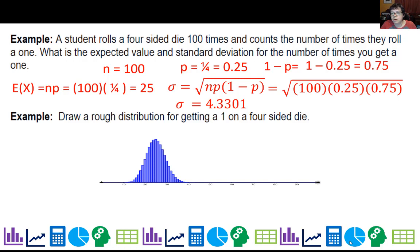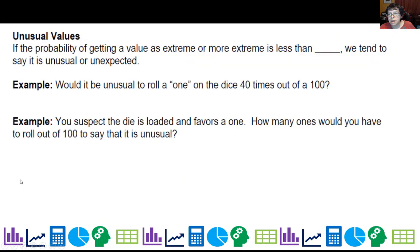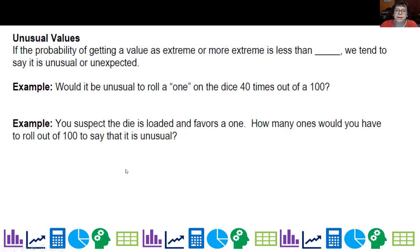How do we decide if something is unusual? It's the rule of thumb decided by the godfather of statistics: if it's less than 5% probability of getting something, we say it's unusual or unexpected.